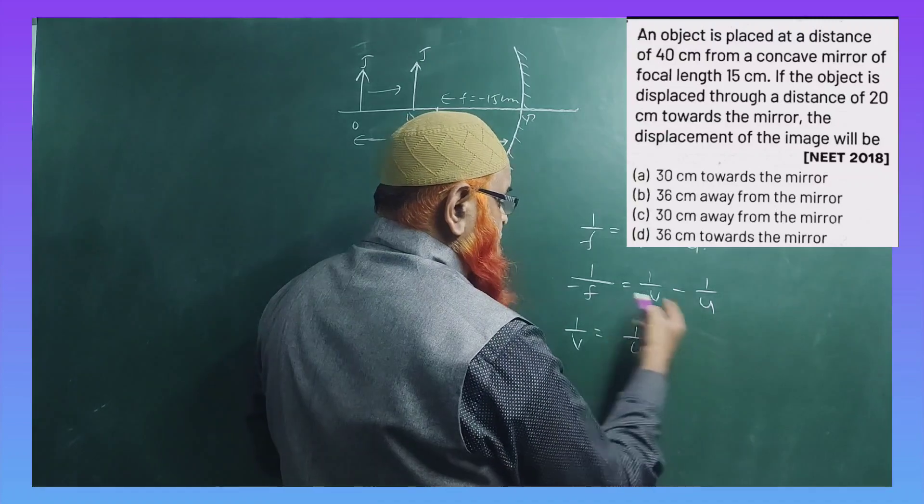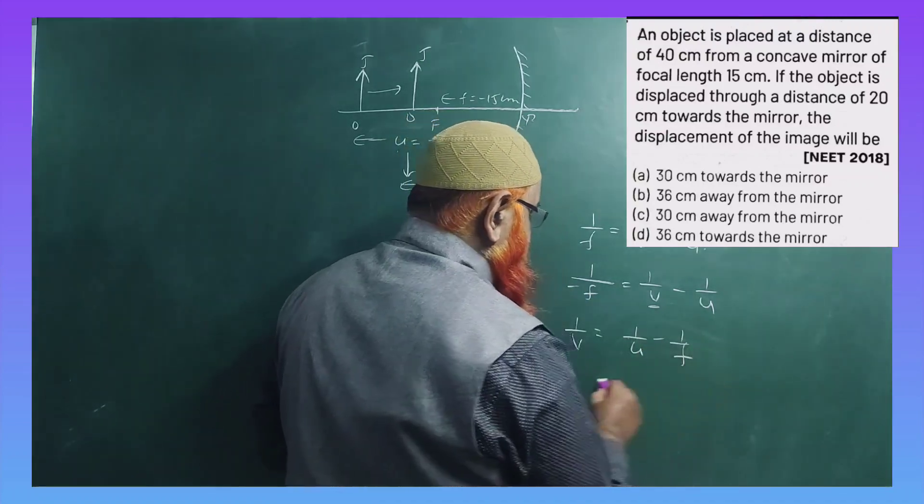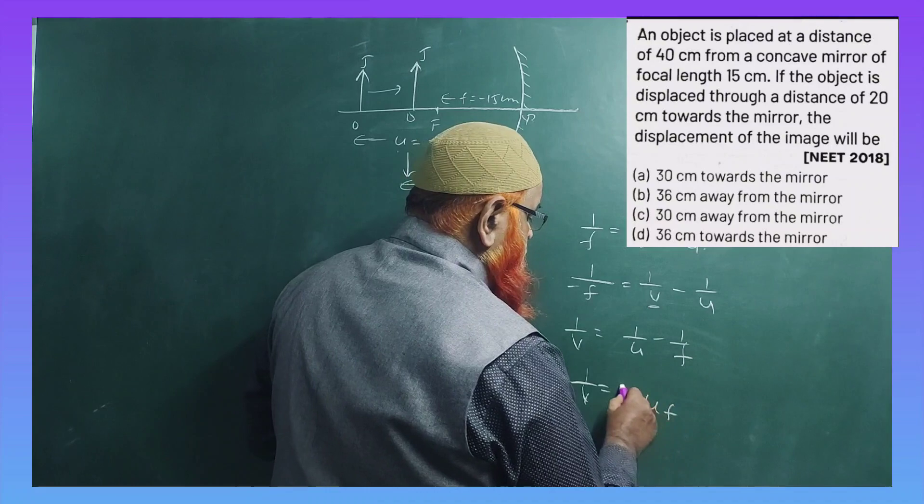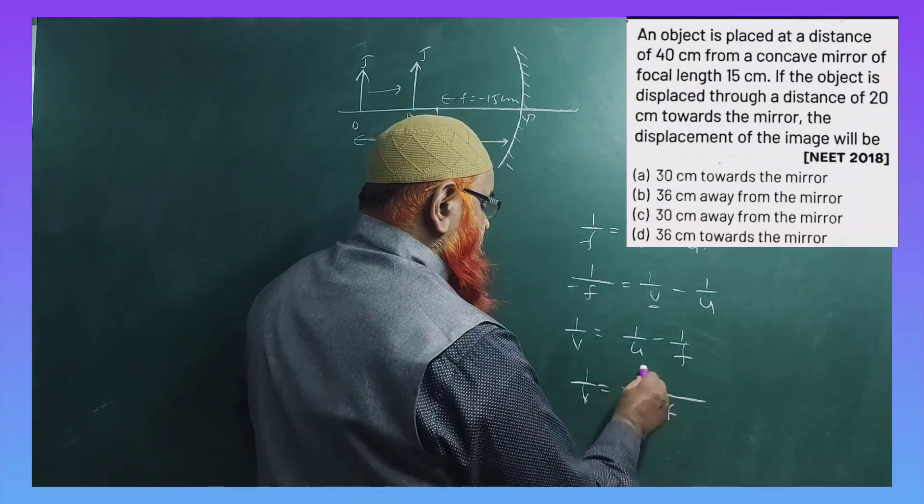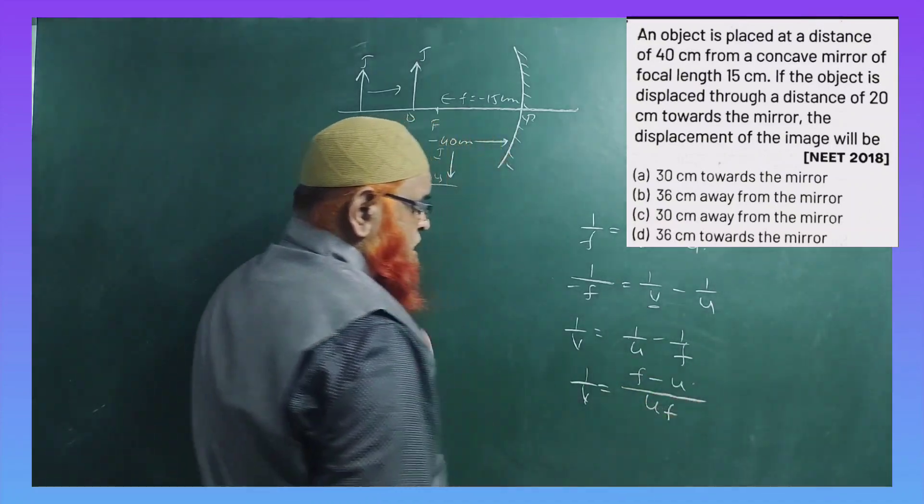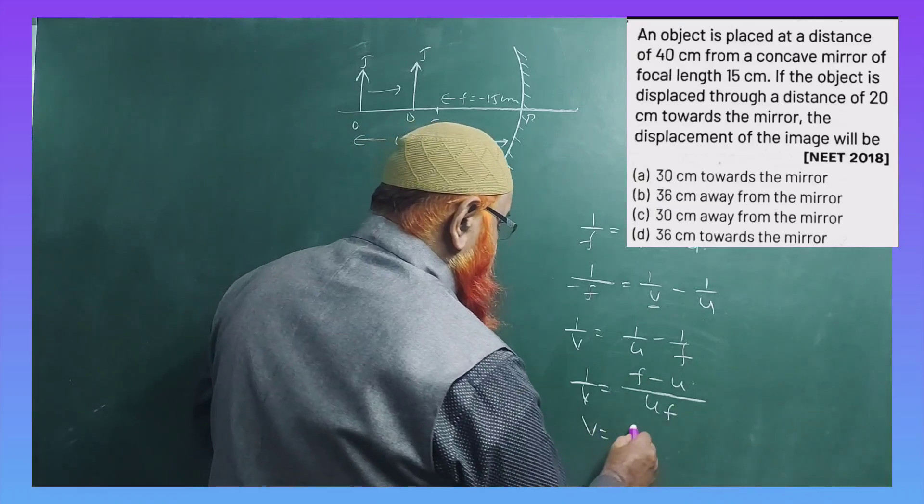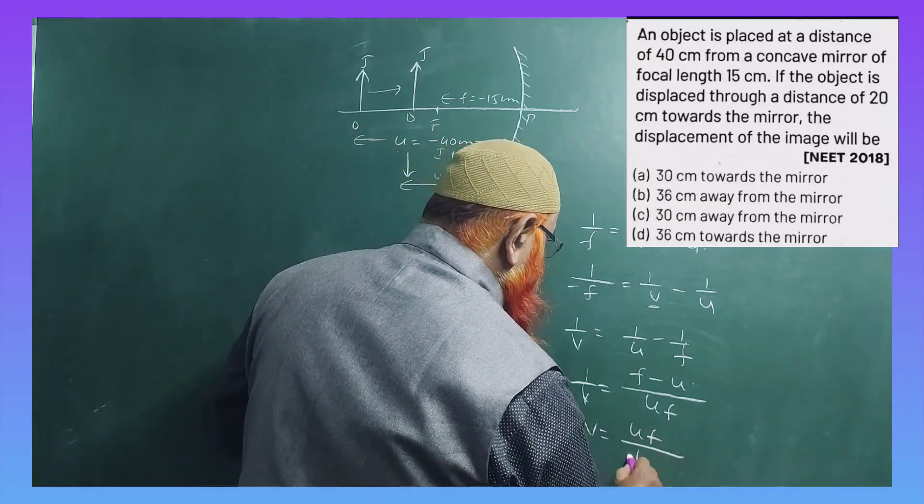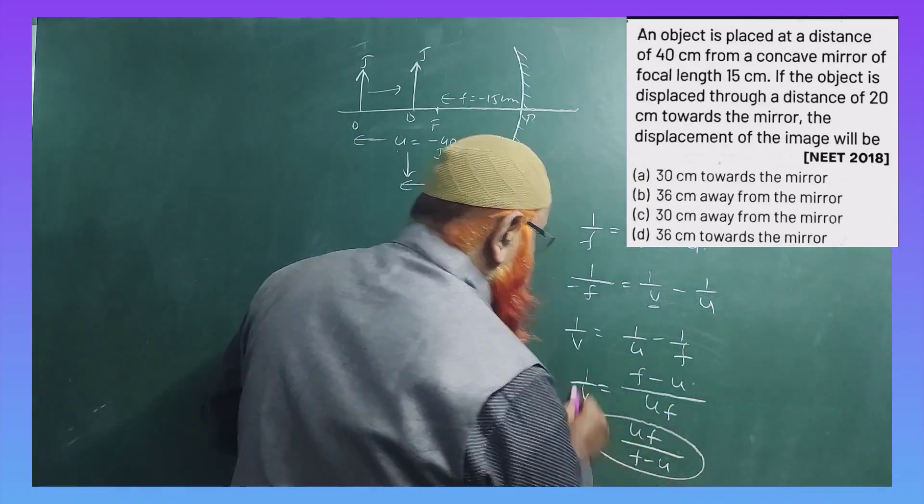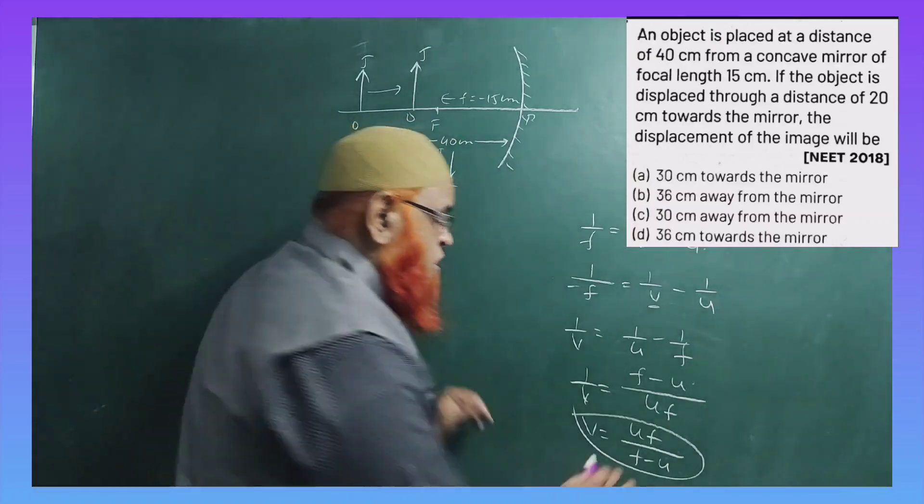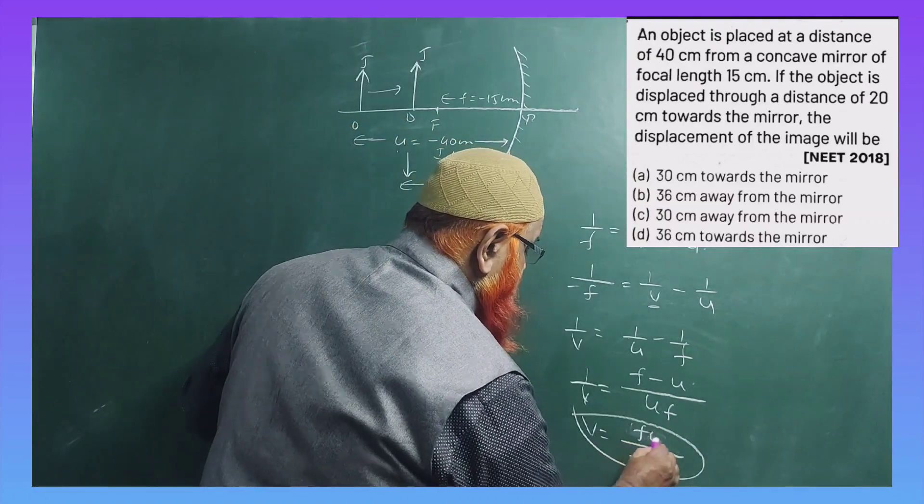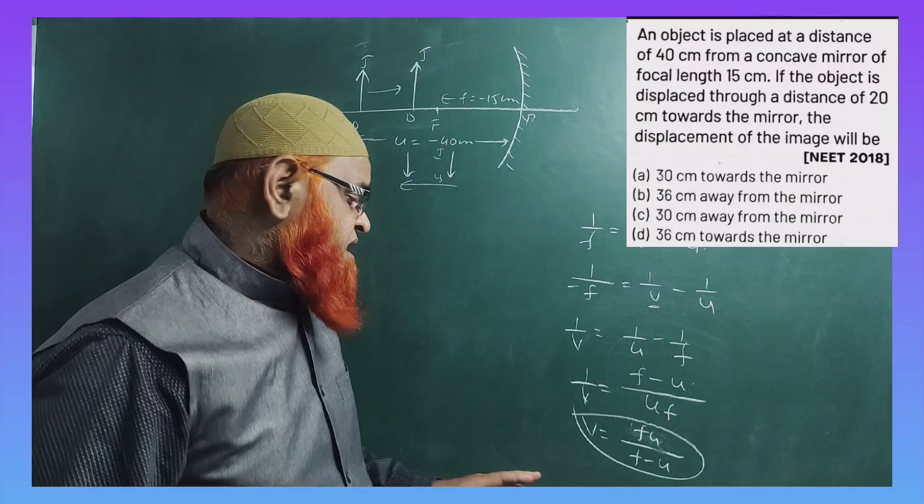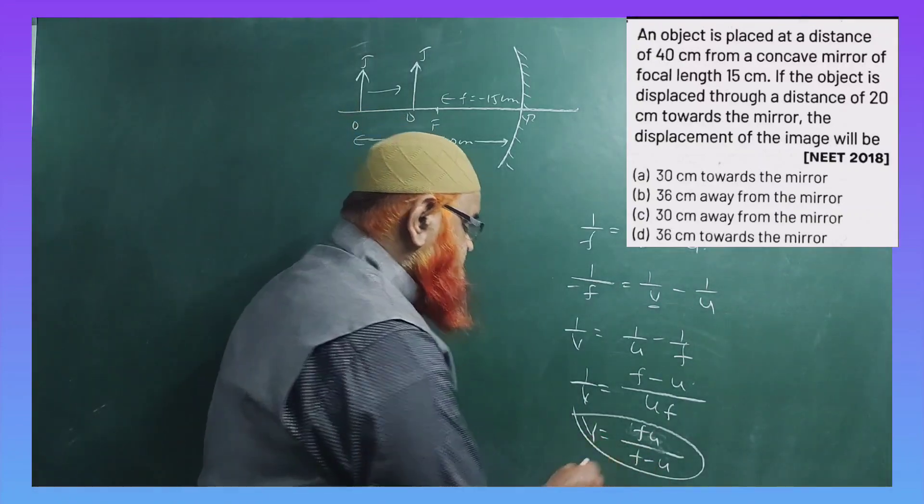So I will write it as 1/v = 1/u - 1/f. You will get a formula for v as uf/(f-u) or fu/(f-u). You can write fu/(f-u) for easy remembrance. This is for the first case, the image distance for the first case.